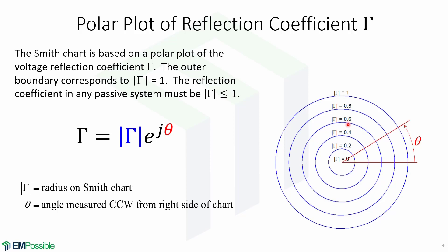Notice that the outer boundary corresponds to the magnitude equals to 1. This means that the Smith chart only models passive devices. The reflection coefficient in any passive system must be less than or equal to 1.